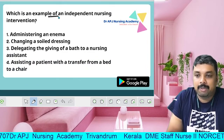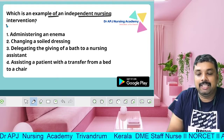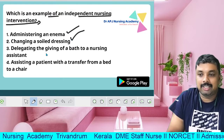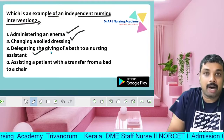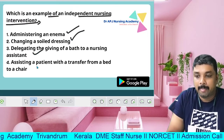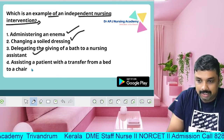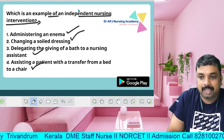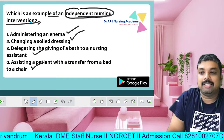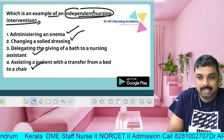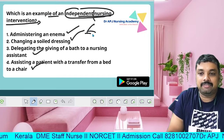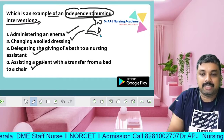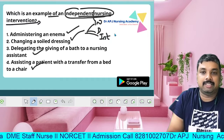What is an example of independent nursing intervention? The options are: administering an enema, changing a soiled dressing, delegating giving a bath to a nursing assistant, or assisting a patient with a transfer from bed to a chair. Now let's classify these into independent nursing interventions, dependent nursing interventions, and interdependent nursing interventions.